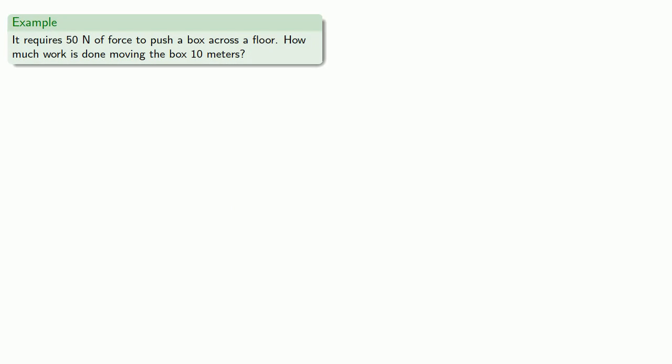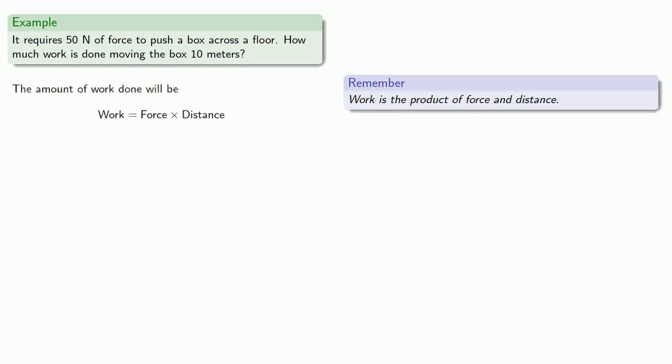For example, suppose it requires 50 Newtons of force to push a box across the floor. How much work is done moving the box 10 meters? So, remember, work is the product of force and distance, and so the amount of work done will be the force, 50 Newtons, times the distance, 10 meters.